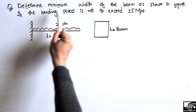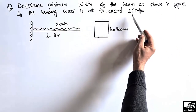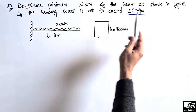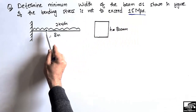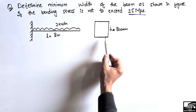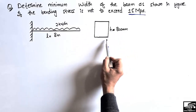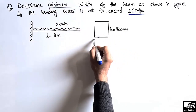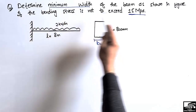The question states: determine the minimum width of the beam as shown in the figure, if the bending stress is not to exceed 15 megapascal. This is a cantilever beam loaded with a uniformly distributed load of 2 kN per meter, the beam length is 8 meters, the depth of the beam is 800 millimeters, and the width is unknown. We have to find the minimum width of this beam.